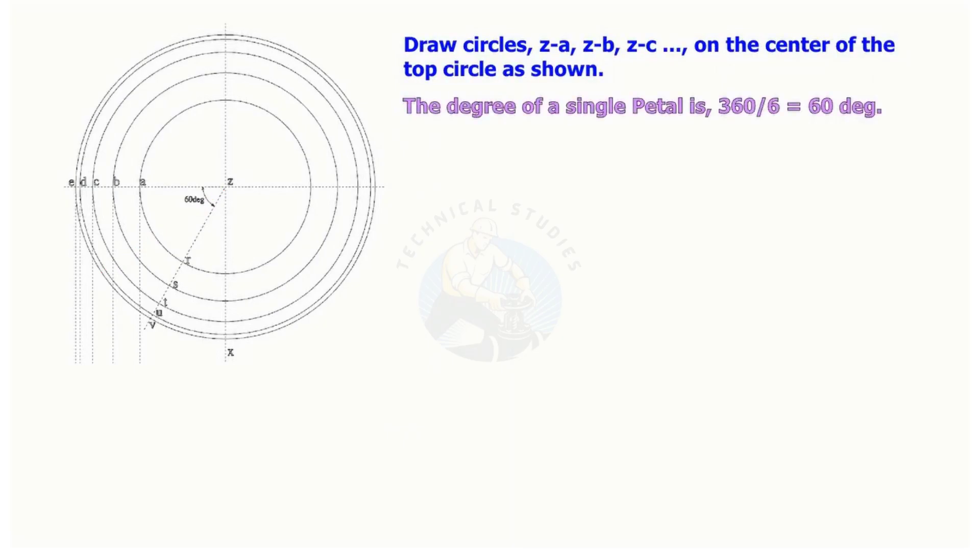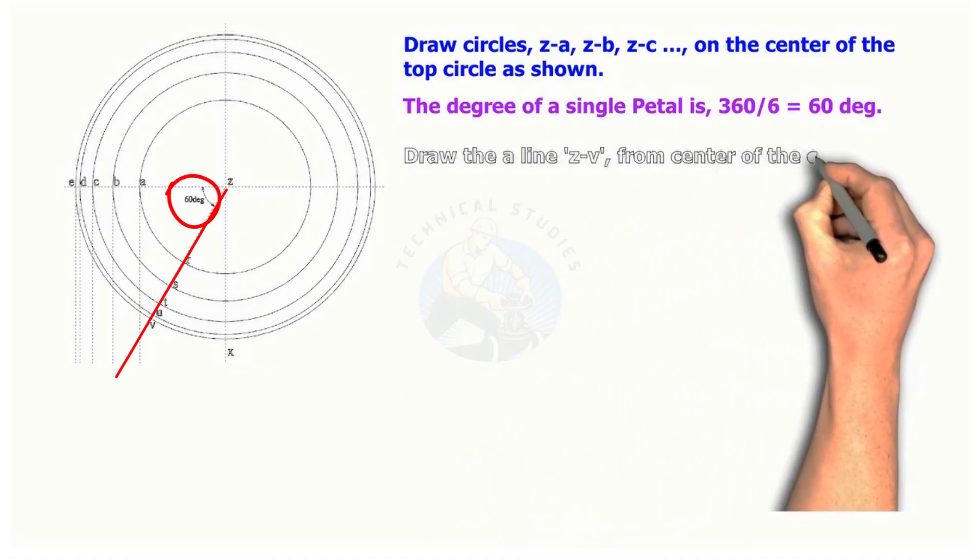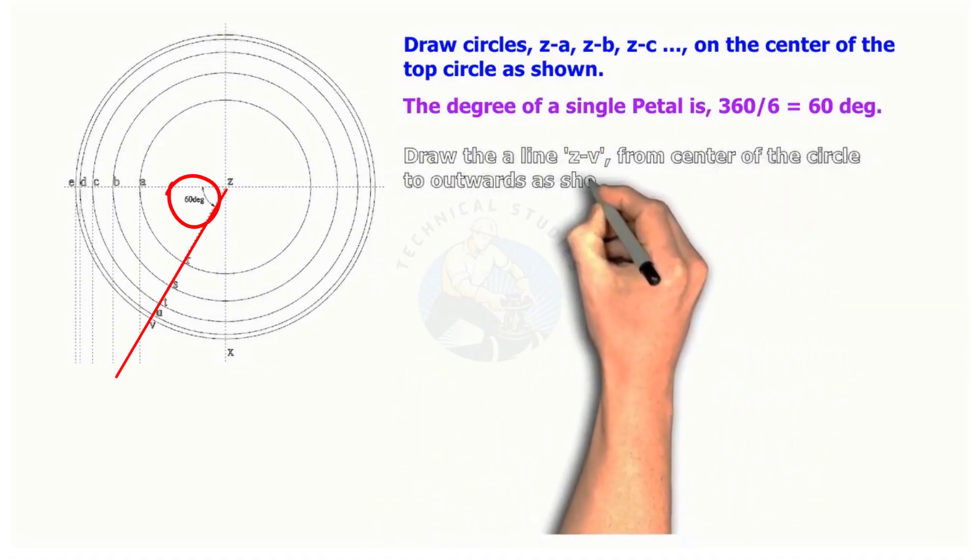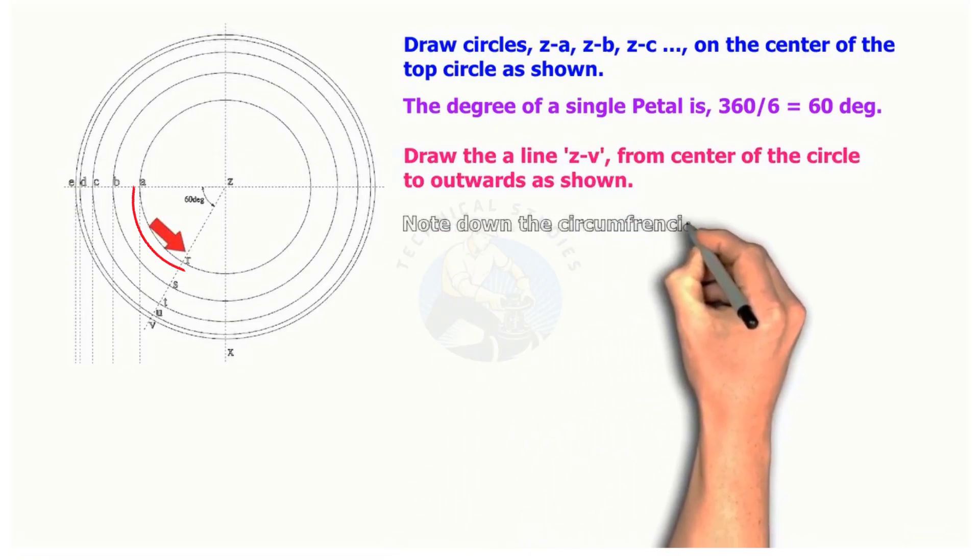Since the number of petals are 6, divide 360 degrees by 6. Draw a line ZA, ZC, etc., on the center of the top circle as shown. The included angle shall be 60 degrees. Note down the arc lengths of AR to EV.